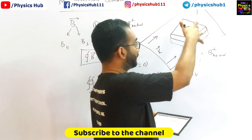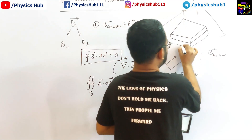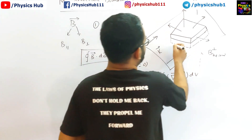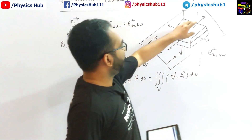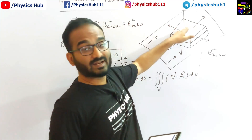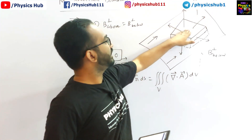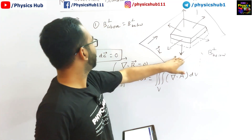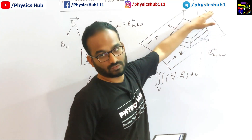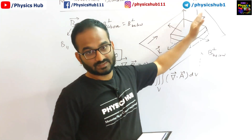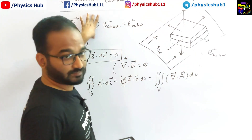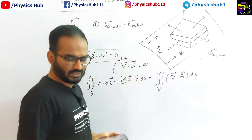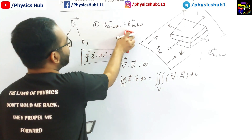If you consider this pill box, it has six surfaces: top, bottom, and four sides. B_perpendicular_above is parallel to the top surface area direction, contributing B_perpendicular_above times A. For the bottom, B_perpendicular_below and the area direction are opposite, so a negative sign appears. The four side surfaces do not contribute because the angle between those surfaces and the magnetic field direction is 90 degrees. This gives us B_perpendicular_above minus B_perpendicular_below equals zero — our first boundary condition that the perpendicular component is continuous at the boundary.